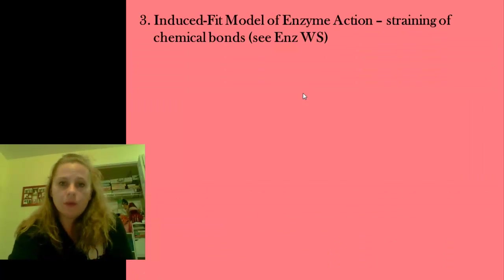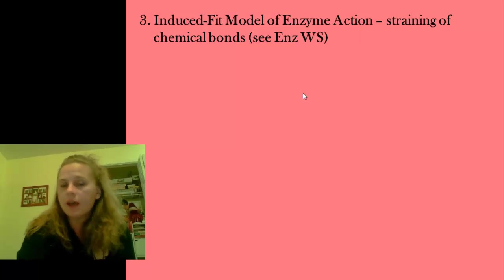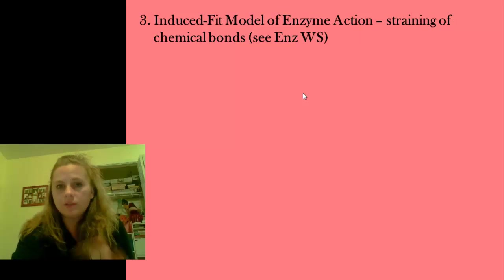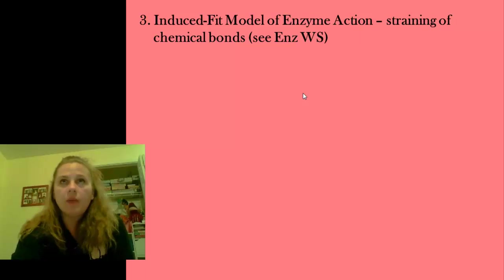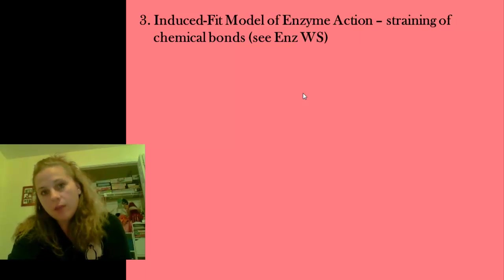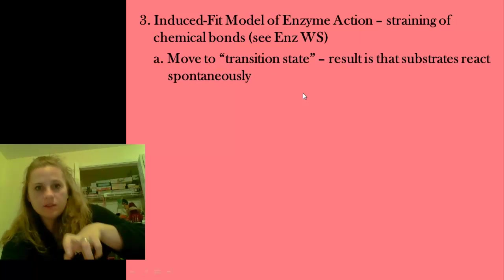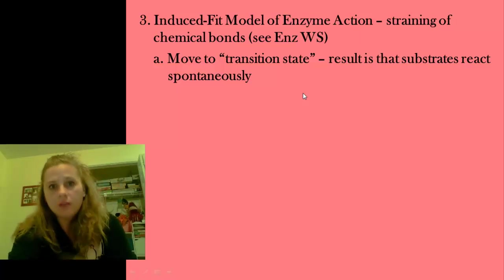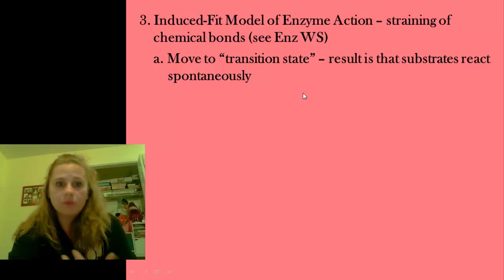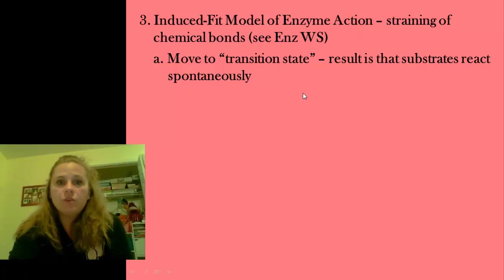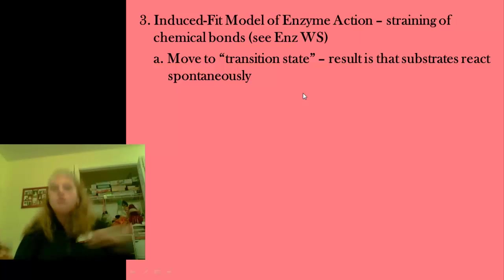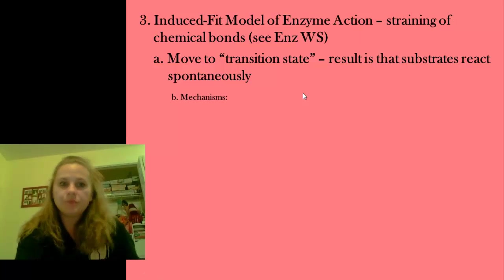The induced fit model — we'll be doing a worksheet in class to work through what this lock and key model means. What happens is the enzyme comes in and binds to the substrate. There's a straining on the chemical bonds, which either breaks them or helps to put them in a place where it's more likely they'll combine. You get the idea of a spontaneous reaction as a result.